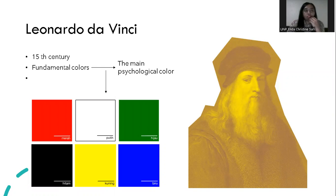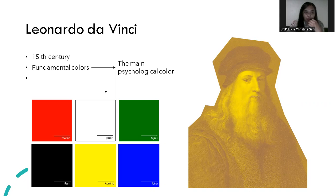Now, do we know about Leonardo da Vinci? He is from the 15th century and identified fundamental colors — the main colors in psychological color theory — like red, white, green, black, yellow, and blue. These are the main psychology of color.